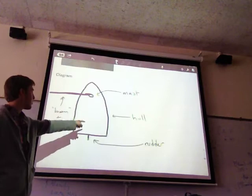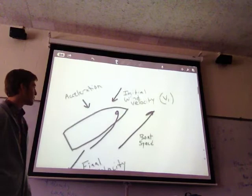This is your boom and sail. That little circle is the mast. This is the hull and this is the rudder from the top.